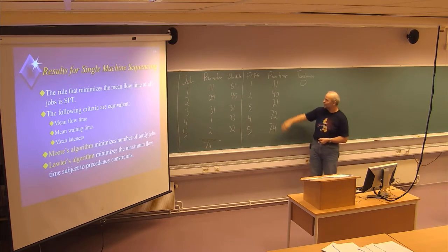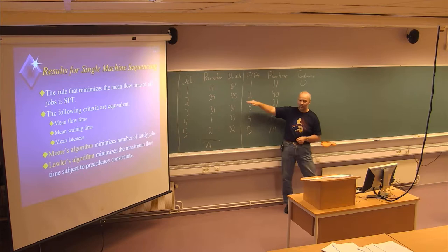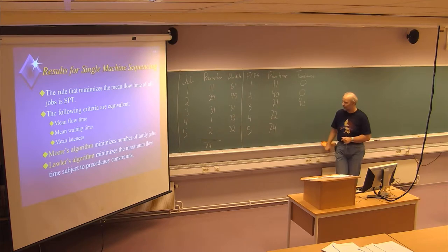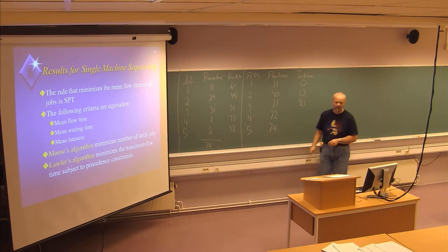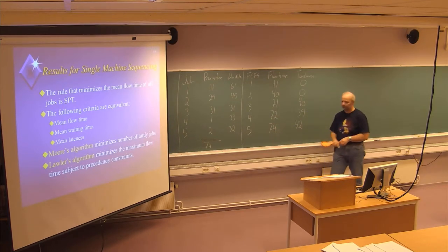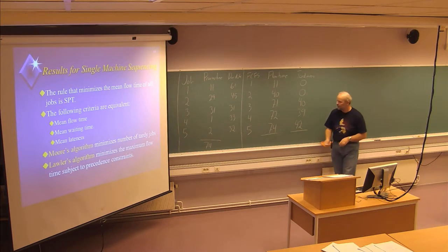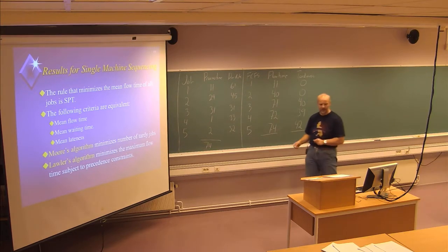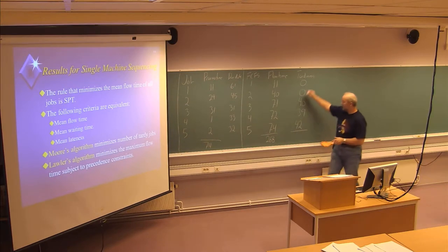Job 3 is finished by day 71 but should be finished by day 31 — 40 days delayed. Job 4 is finished by day 72 but should be finished by day 33 — 39 days delayed. Job 5 is finished by day 74 but should be finished by day 32 — 42 days delayed. The sum of all flow times is 268, and the sum of all tardiness values is 121.